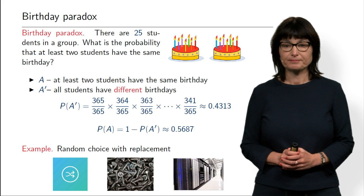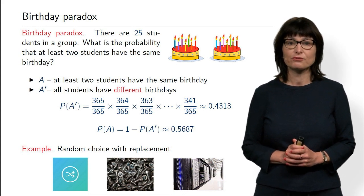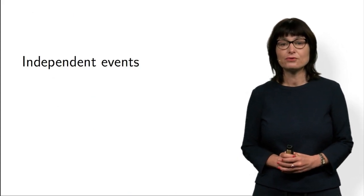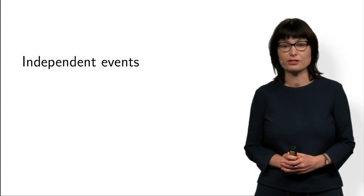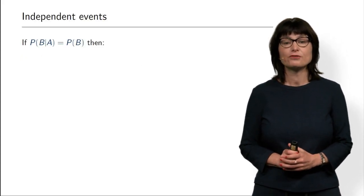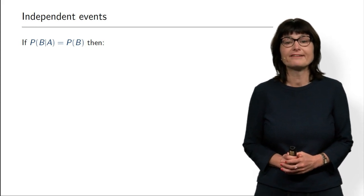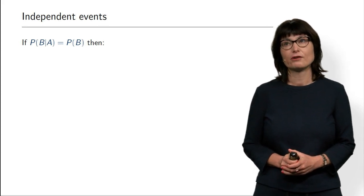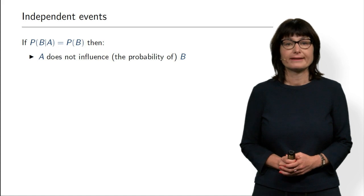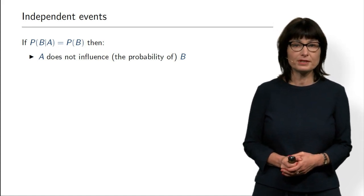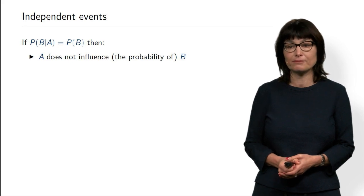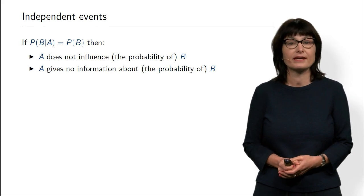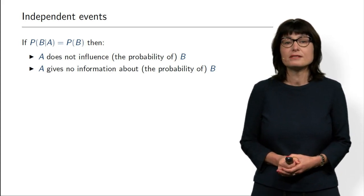That was the birthday paradox. Now we go to the last section of this micro lecture: independent events. This notion is very closely related to conditional probability. Assume that the conditional probability of B given A is actually the same as the probability of B. Then what can we say about B? It means that A doesn't influence the probability of B. We know that A happens, but the probability of B didn't change — in other words, A gives no information about B.